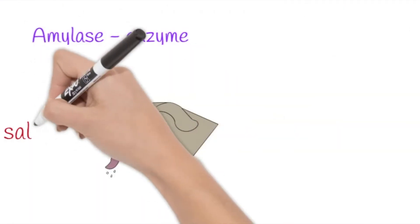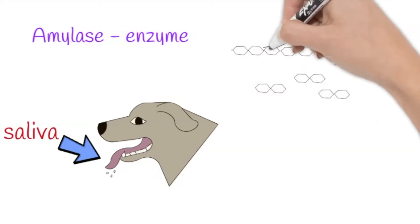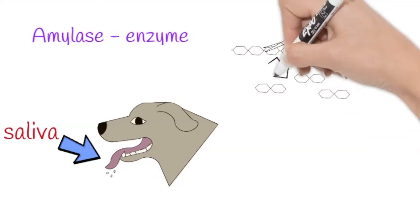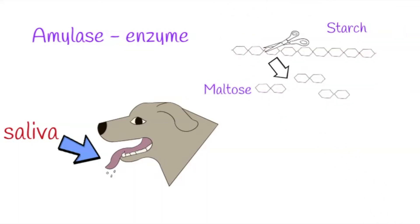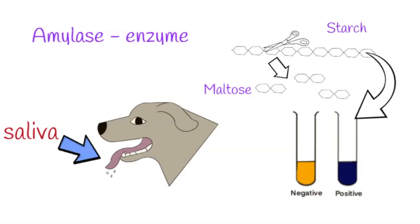Amylase is found in saliva. It breaks down the complex long-chain carbohydrate starch into the simple sugar maltose. Iodine solution is used to test whether starch is present. If starch is present, it goes blue-black. If amylase breaks down starch, there will be less and less starch present in solution, and eventually none left, and the iodine will stay orange.